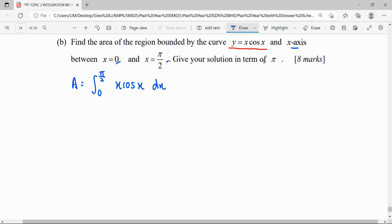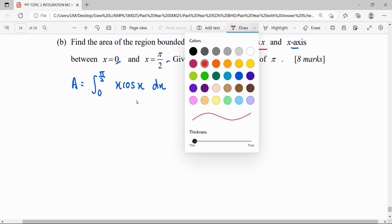In order to integrate this function, you can notice that x is multiplied with cos x - a polynomial function mixed with a trigonometry function. So in order to solve this, we need integration by parts.